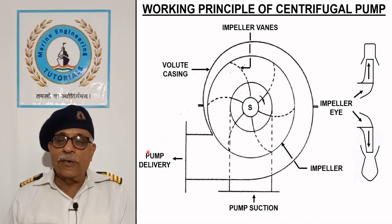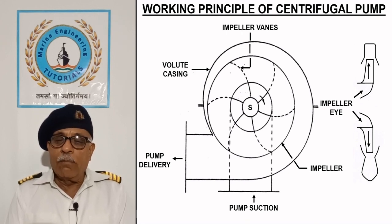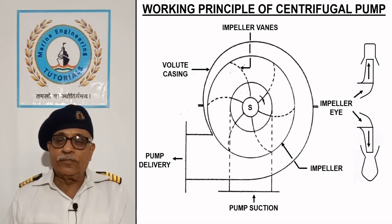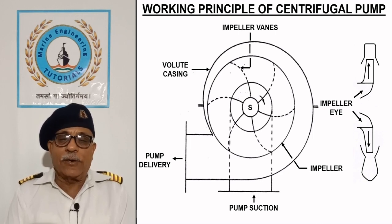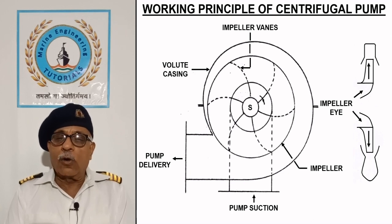The liquid is finally discharged from the pump delivery connection. A centrifugal pump provides a constant head or pressure for a certain system because the impeller diameter is fixed and the motor usually operates at constant speed. As the maximum pressure developed by a centrifugal pump is limited, it does not have a relief valve as required by displacement pumps, and it is usually started with the delivery valve closed for limiting the starting torque or motor current.